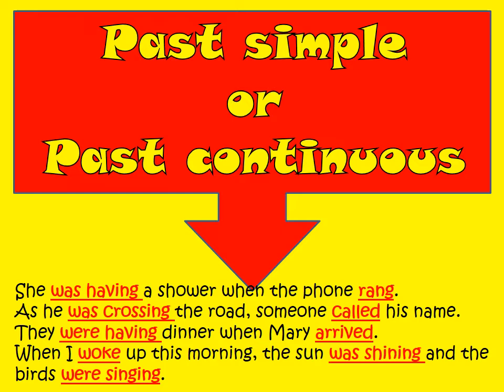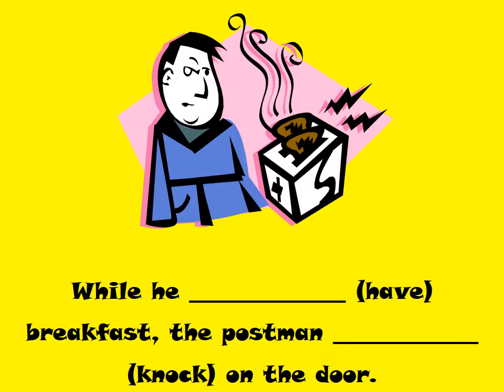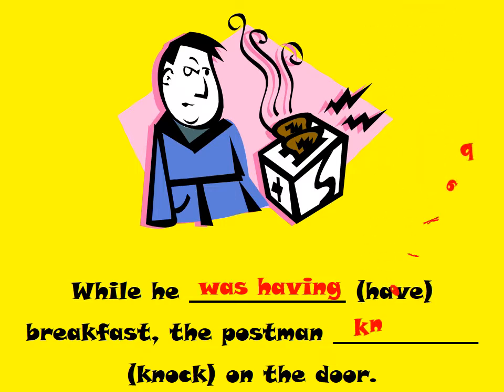Okay, let's have some exercises together. While he was having breakfast, the postman knocked on the door. So while he was having breakfast is the action in progress. Where is the interrupted action? The postman knocked on the door. Very good.